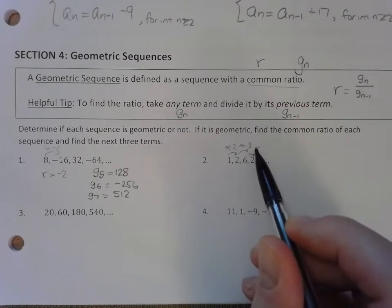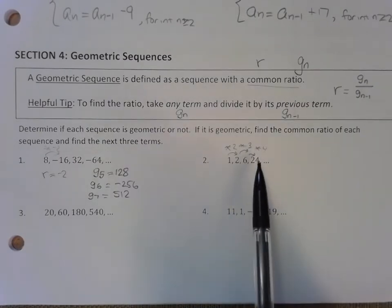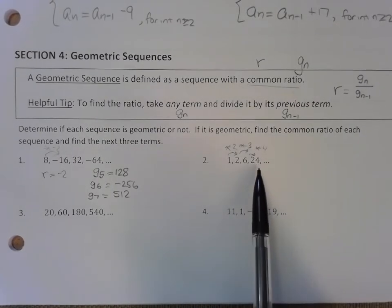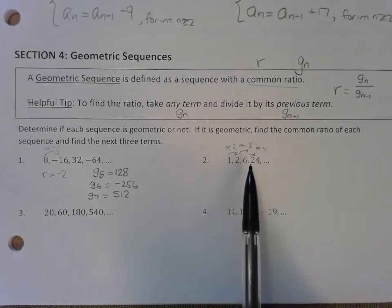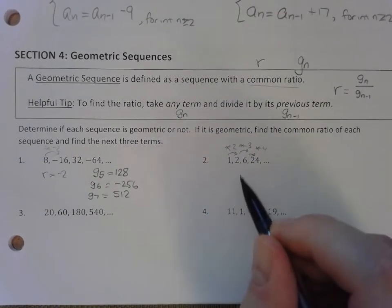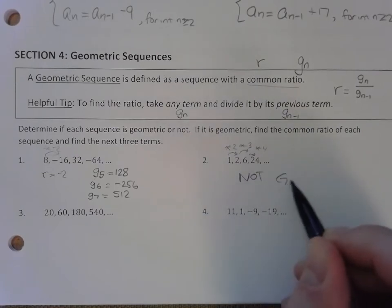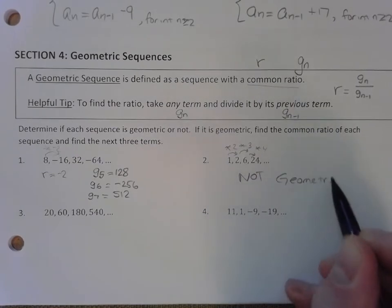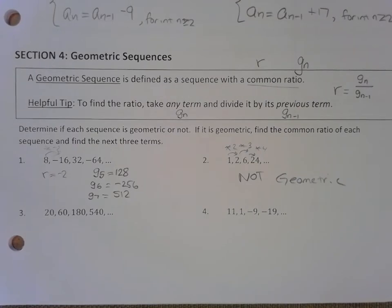Although I can describe this pattern, the fourth term is 4 times the third term and the third term is 3 times the second term, I wouldn't consider this geometric. Let's write not geometric. And we don't have to complete this at all.